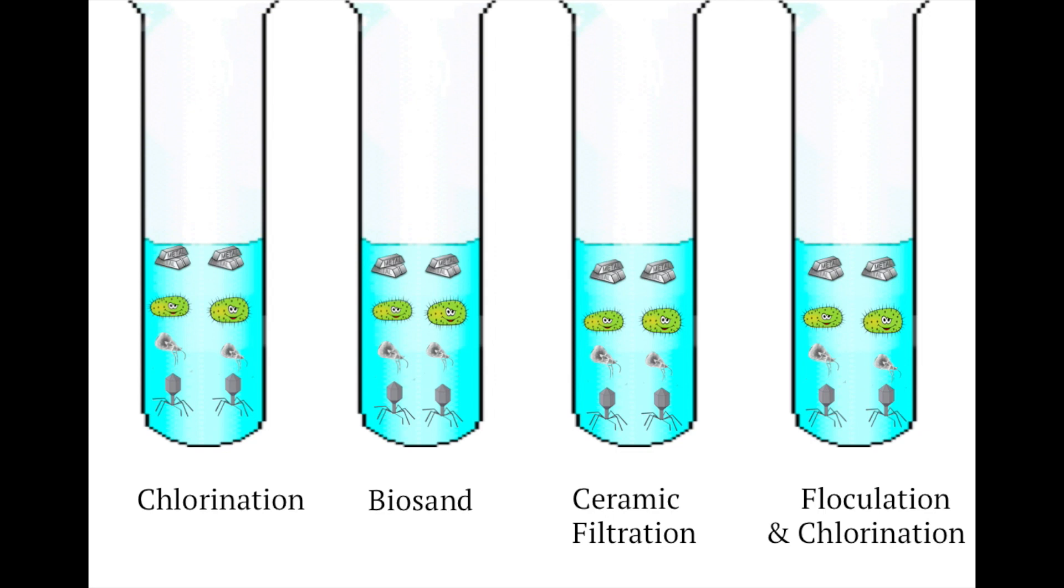When we treat raw water with chlorine, we observe that it is highly effective against bacteria and is capable of eliminating 3 quarters of viruses and protozoa. Biosand, ceramic filtration and the combination of flocculation and chlorination are theoretically highly effective against the 3 biological components.